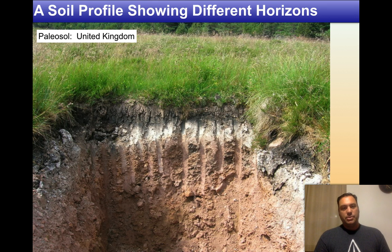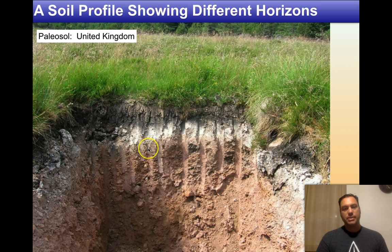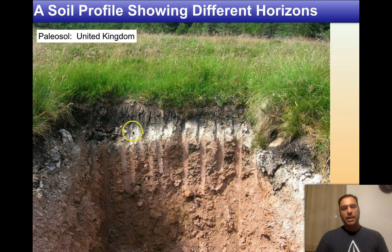Here's another set of horizons — this is what they call a paleosol, which means an ancient soil. It's very, very old, from a trench dug in the United Kingdom. Here we can see the O horizon and the A horizon — that's the good productive zone of organic accumulation at the top. Notice it's not very thick. Right below it is the E horizon, probably about four inches thick, sitting on roughly six inches of A horizon. Below that, going all the way down, is the B horizon, where you can see some busted-up material. You can clearly see the different units of soil development occurring.